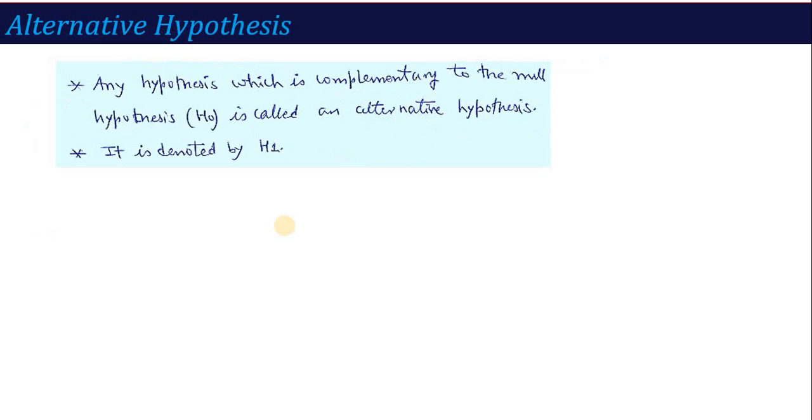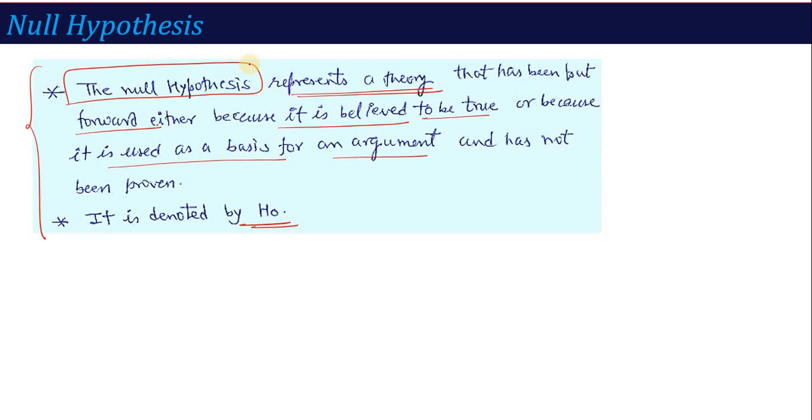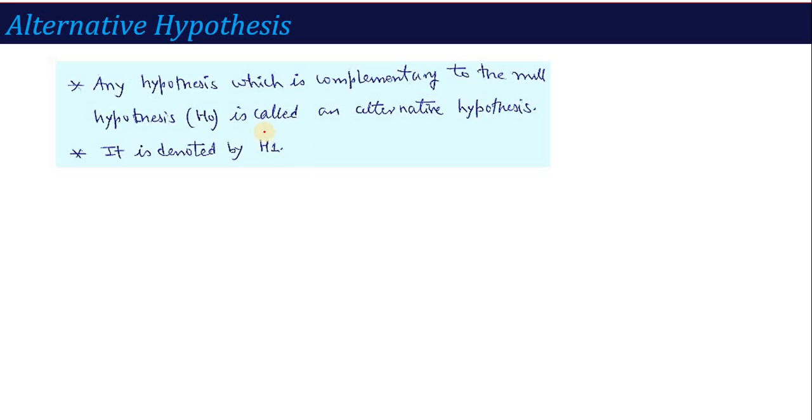Null hypothesis has another part, called alternate hypothesis. Just its complement. Alternate hypothesis is the complement of the null hypothesis. If I said I don't have diabetes and this is null hypothesis H₀, then the alternate would be I have diabetes, denoted by H₁. Just a complement - whatever you have taken in null hypothesis, its opposite is your alternative hypothesis.